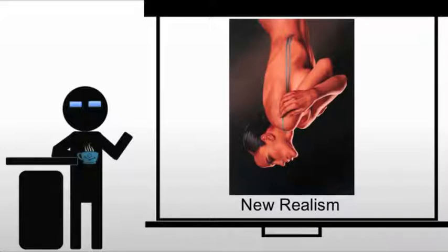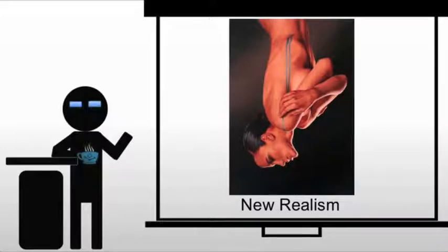What ties it together is the observable reality in the work. And oftentimes in new realism, we're talking hyper-realism or photo-realism — a really intense sense of realism. A lot of this is their way of starting to push back against abstraction and accept the camera.